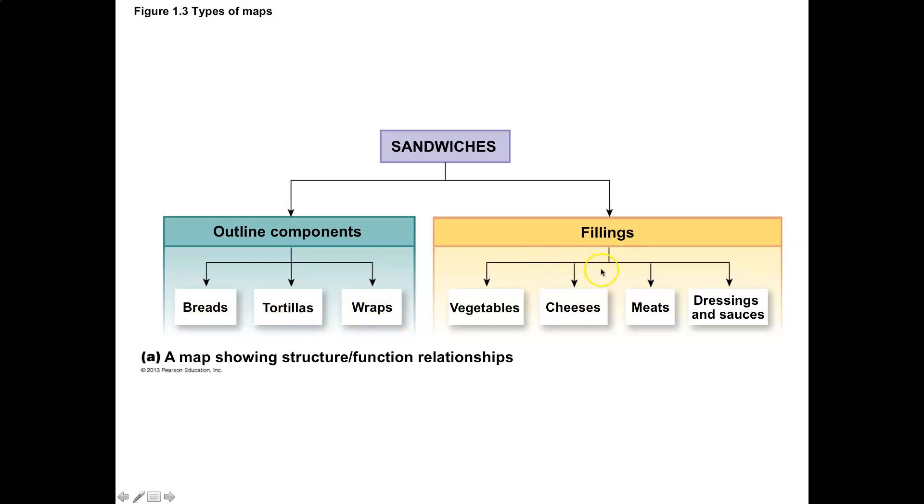And then what kinds of things could you put in the sandwich - vegetables, cheeses, meats, whatever. The point is that structural and functional relationships can be presented in a mapping fashion. And so you'll see that a lot in textbooks when you study anatomy and physiology.